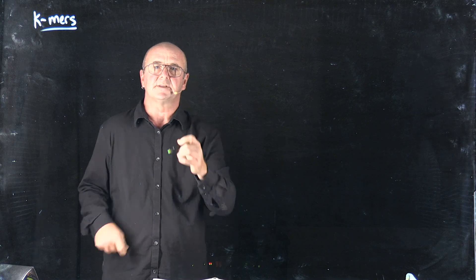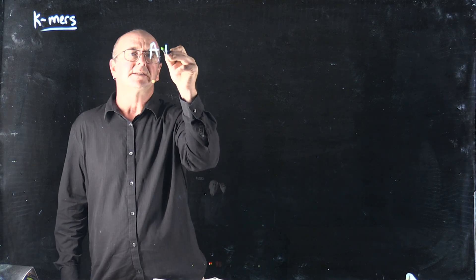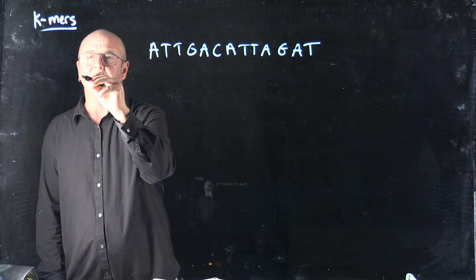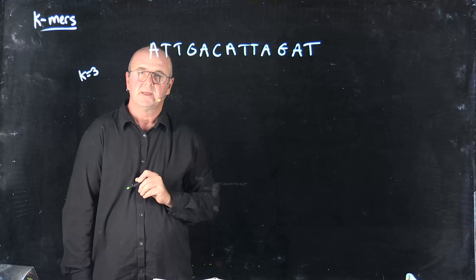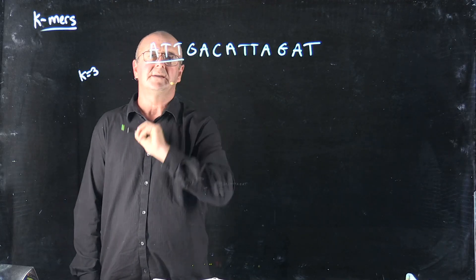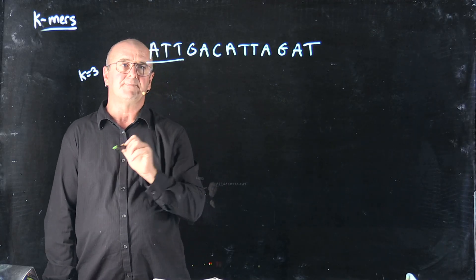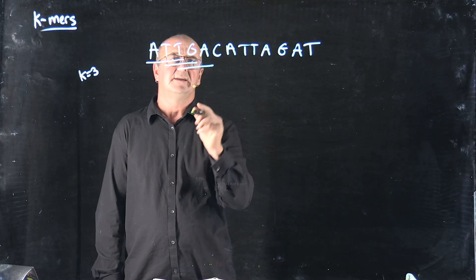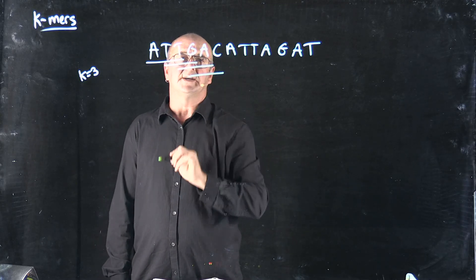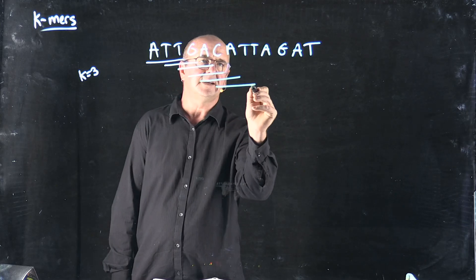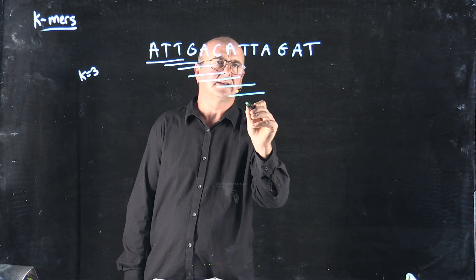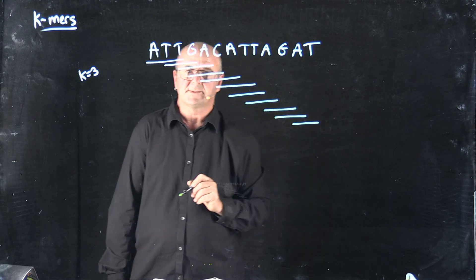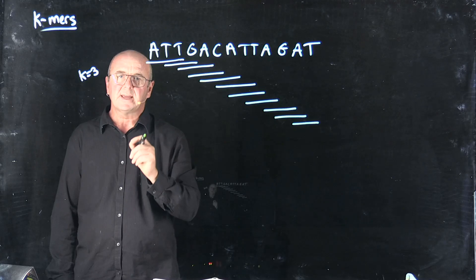So what do we mean by K-mers? Here is a DNA string. If K is equal to 3, then I could say here is one K-mer: ATT. Here's another K-mer: TTG. Here's another: TGA. Here's another: GAC, ACA, CAT, ATT, TTA, TAG, AGA, GAT. So those are my K-mers where K is equal to 3.